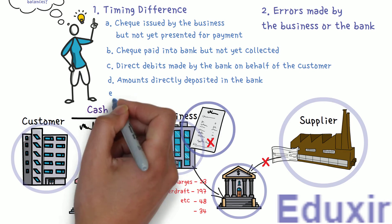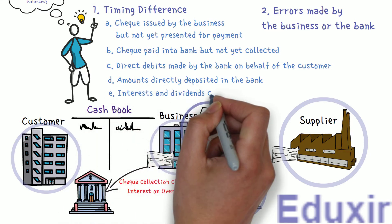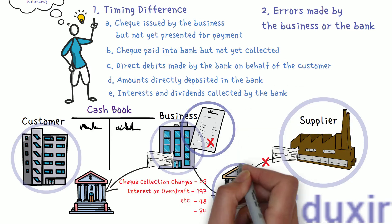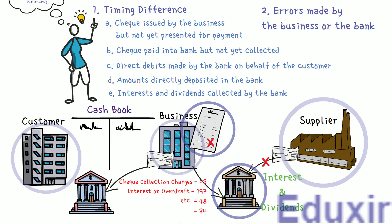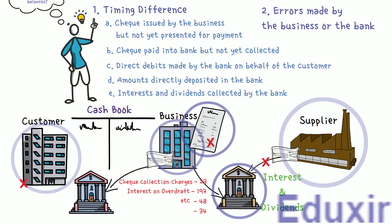The next reason is interest and dividends collected by the bank. When the bank collects interest and dividends on behalf of the customer — here 'customer' refers to our business — these are immediately credited to the account. But the business will not know about these transactions until the bank statement is received, causing a difference. There are other reasons also, but let us limit our scope to these five reasons for timing difference.